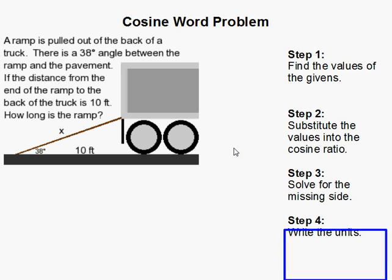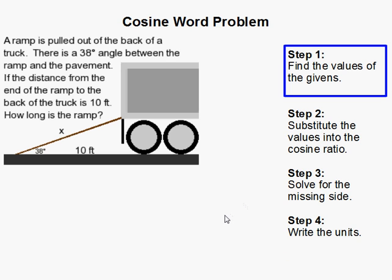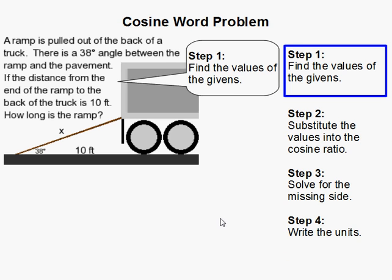All right, let's do a cosine word problem. The first thing we have to do is find the givens.